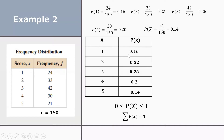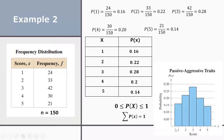Now let's construct the histogram. On the x-axis, we plot the random variable x with scores 1, 2, 3, 4, and 5. On the y-axis, we plot the probability of x. Score 1 is at 0.16 (just above 0.15), score 2 is at 0.22 (two units above 0.20), score 3 is at 0.28 (between 0.25 and 0.30), score 4 is at 0.20, and score 5 is at 0.14. This is the completed histogram.